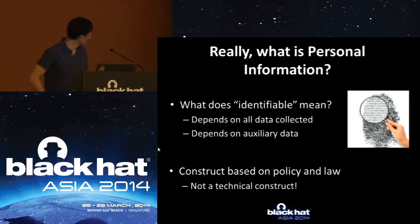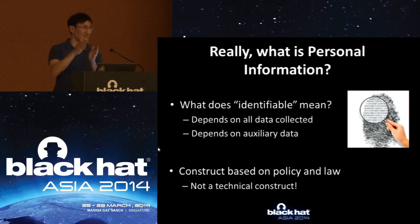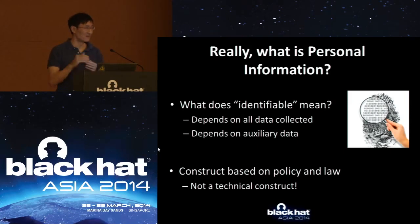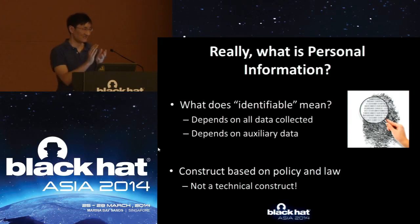The problem is, if you think about this definition, you realize there are some problems with it. What does 'identifiable' really mean? The usual model is that somebody goes through the data you collect and says 'this is personal information, this is not.' But that really doesn't work, because whether something is identifiable depends on all the data. If you consider device fingerprints, if you look at any of those pieces of data in isolation, it's kind of innocuous — but only if you take everything together does it actually identify somebody. So identifiability depends on all the data you collect, not just a few fields.